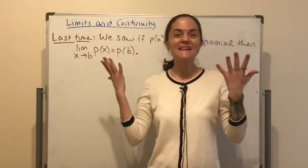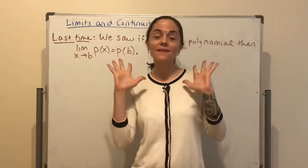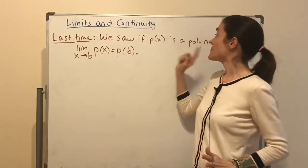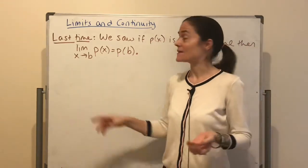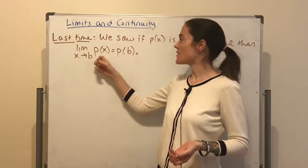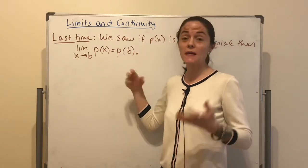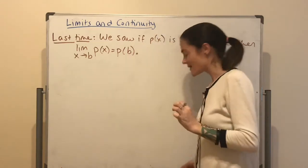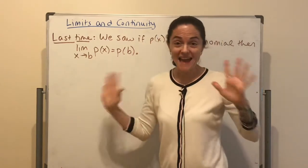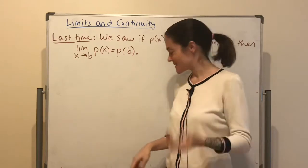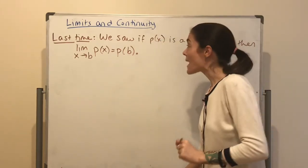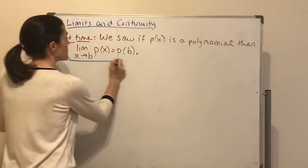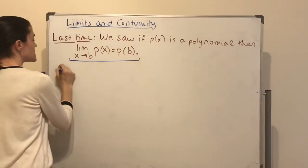Last time, which was day one of limits, we saw that if P of X is a polynomial, the limit as X approaches B of P of X equals P of B. This came from properties of limits together with the limit of F of X as X and the limit of a constant. This property has a name — it's called continuity.